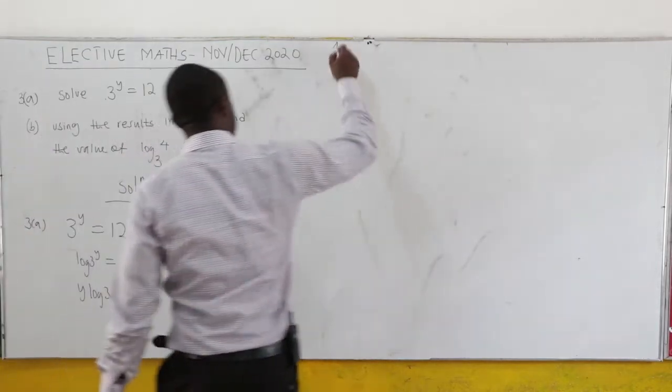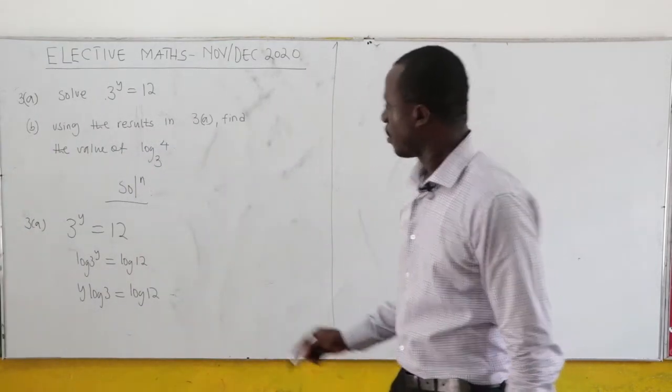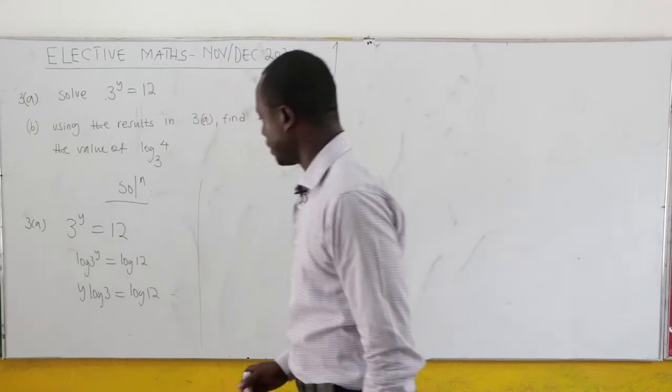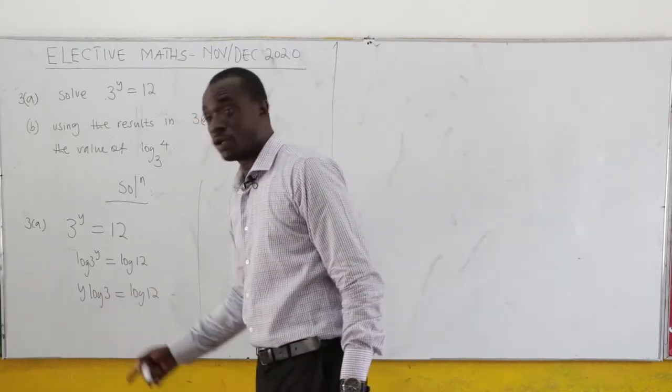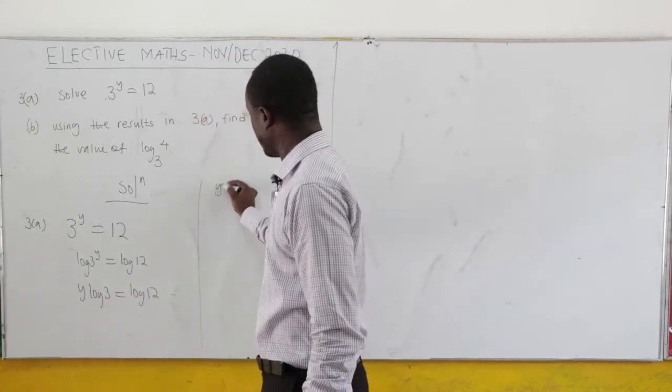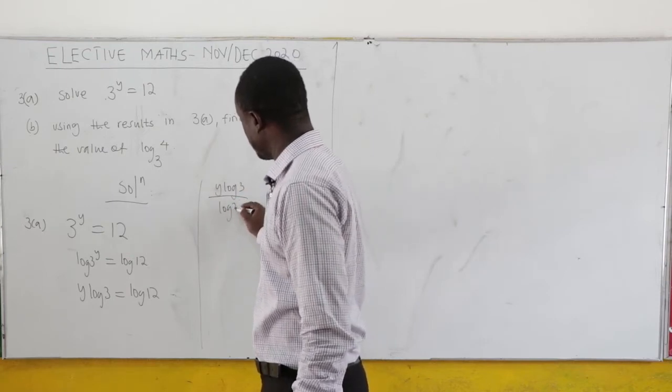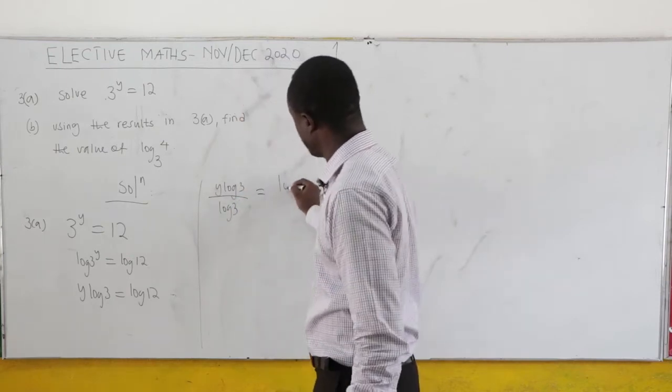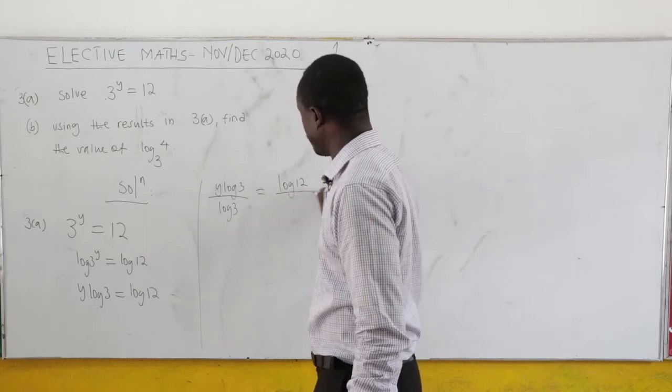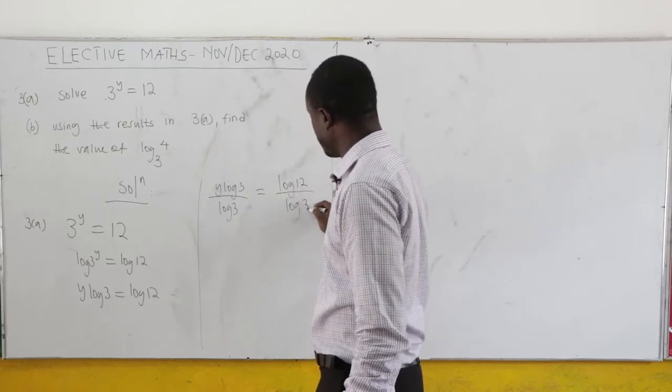Now we want to find y. So on the variable side, what is multiplying the y? So we have y log 3 all over log 3 equals log 12 all over log 3.